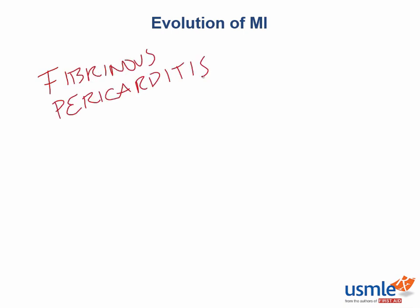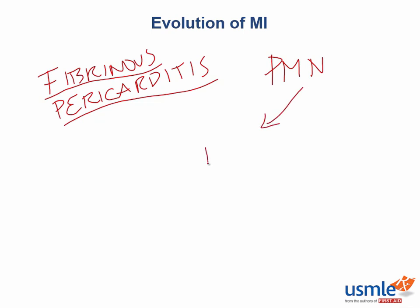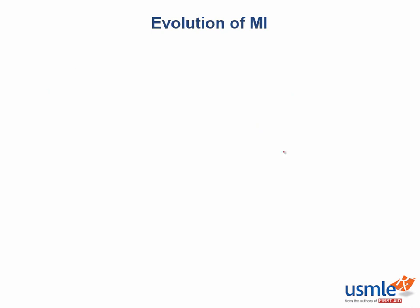During this time period, we have a new potential complication of fibrinous pericarditis. There is tons of inflammation mediated by neutrophils, and this inflammation can extend into the pericardium. What happens next in the evolution of an MI? The neutrophils are always the first guys on the scene, and they call for backup.